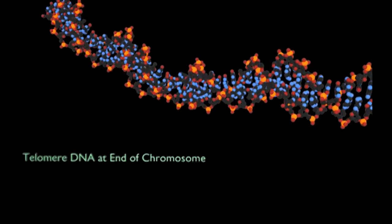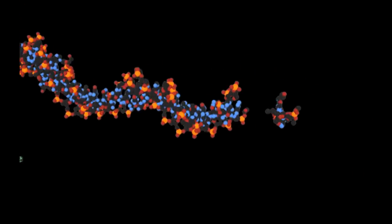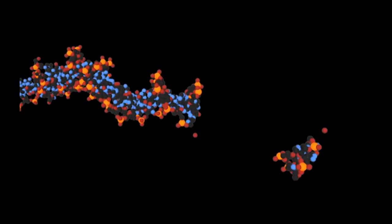So the ends of chromosomes have repeated DNA sequences called telomere DNA. Every time a cell divides, the telomere DNA shortens a little bit, and this causes aging. Eventually, the telomeres get too short, and the populations stop dividing. This is what happens in normal cells.